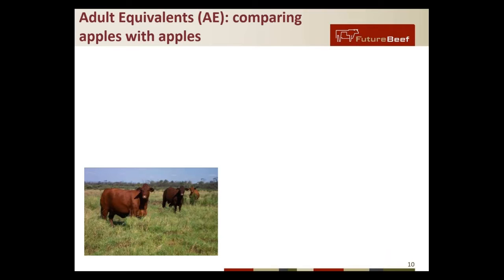Moving into some of the more technical aspects of the forage budget, I wanted to start with adult equivalents. Having different classes of stock on the property can make it a little difficult to compare them all as they weigh different amounts and they eat different amounts. For instance, if you have 500 breeders and 200 weaners, how would you compare one to the other when you're thinking about how long the feed you have will last them? To better enable us to compare one type of animal to another, we use adult equivalents — similar to bringing things back to a per-hectare or per-acre type of value.